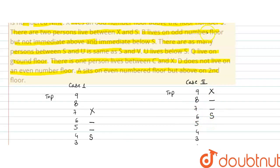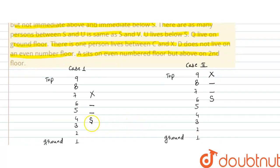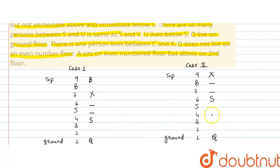B lives on odd number floors but not immediately above or immediately below S. Odd number floor पे है B, but S के ऊपर और नीचे नहीं है। B के लिए जो positions vacant हैं वो 9 और 1 हैं। Q lives on ground floor — मतलब Q पहले number पे होगा। इसलिए B की position 9th floor पे होगी। Case 2 में B के लिए position 3 है, जो odd है और S के adjacent नहीं है।